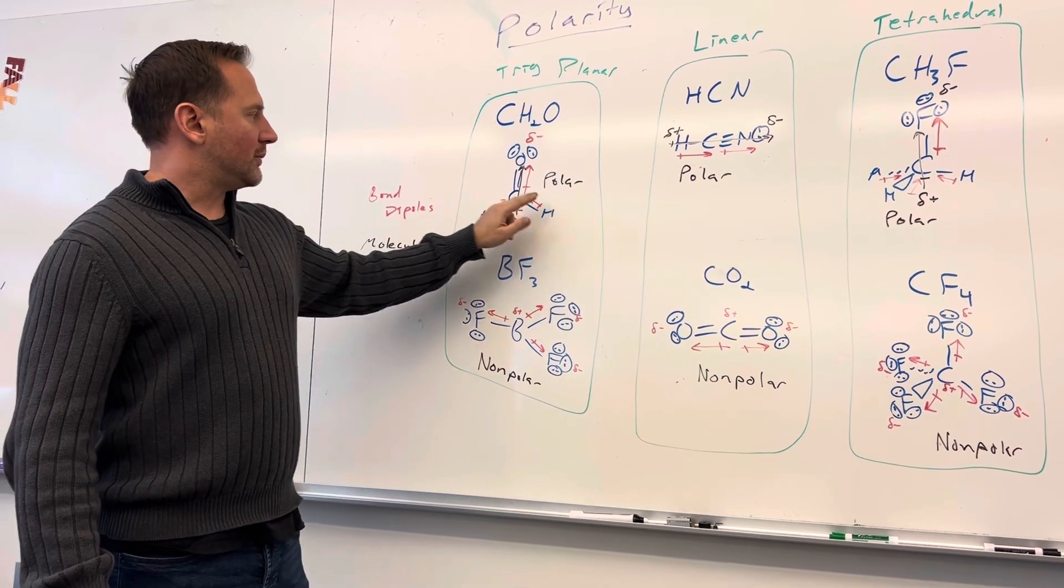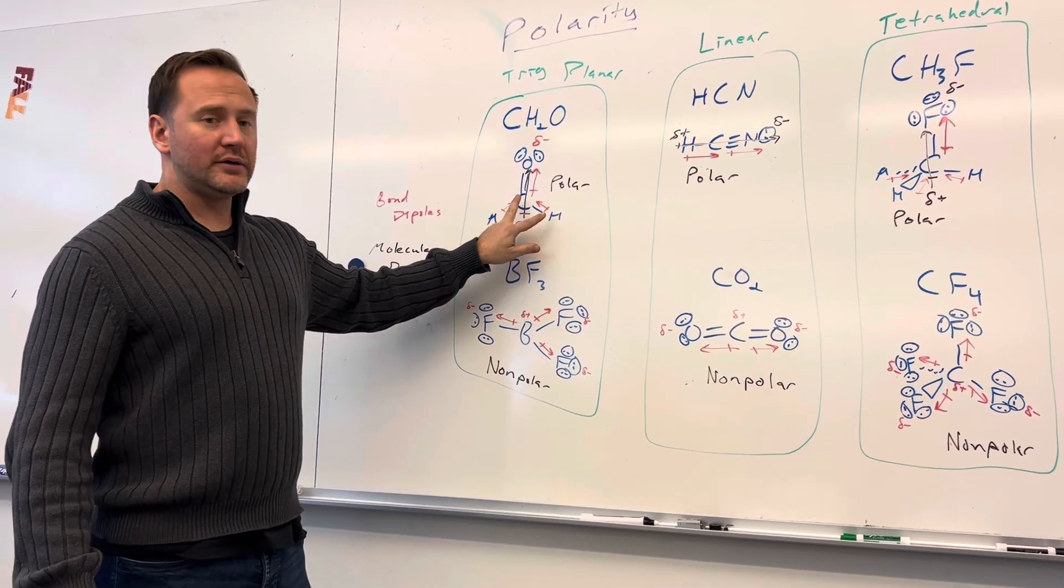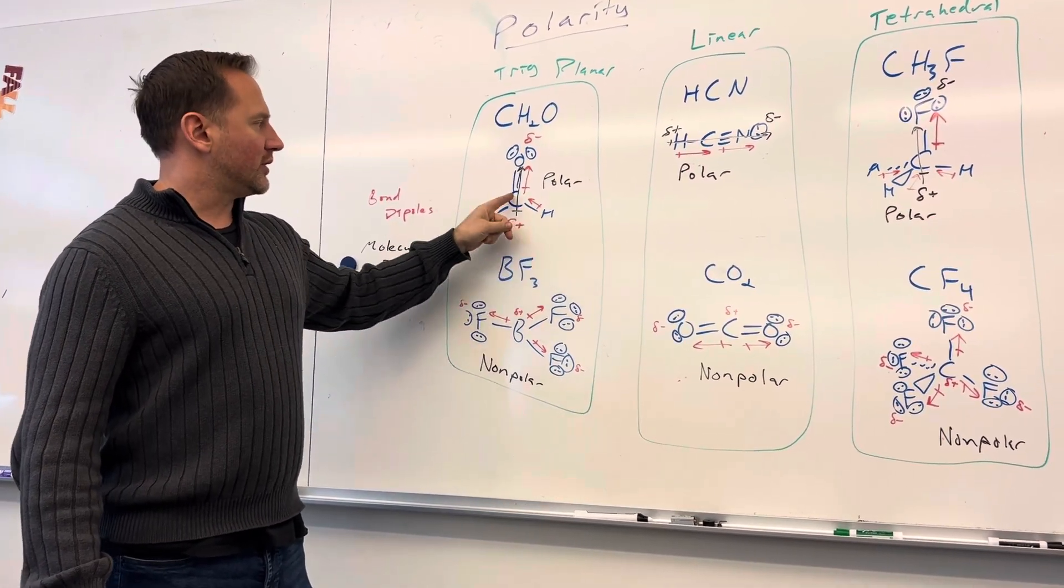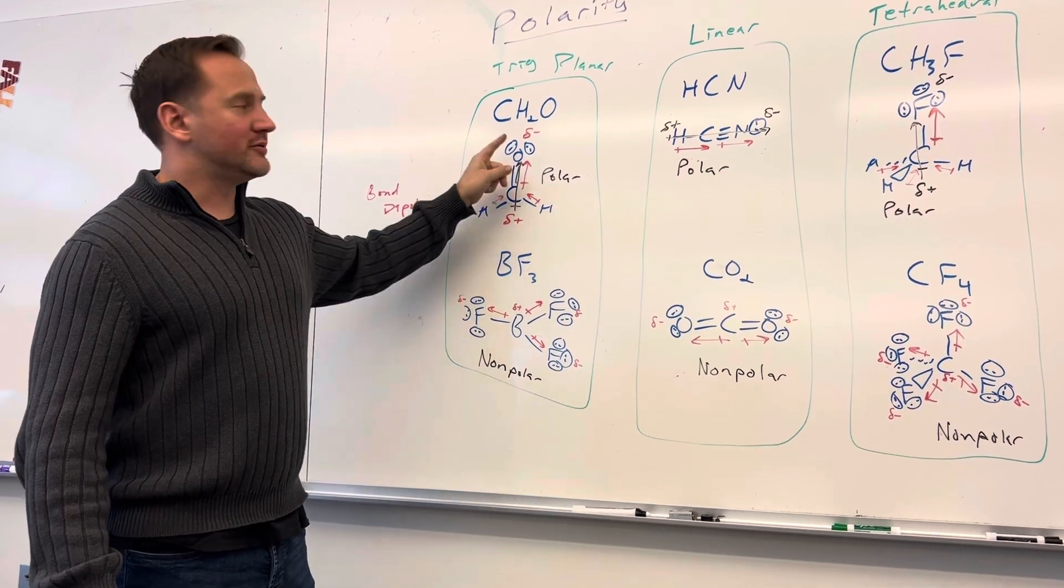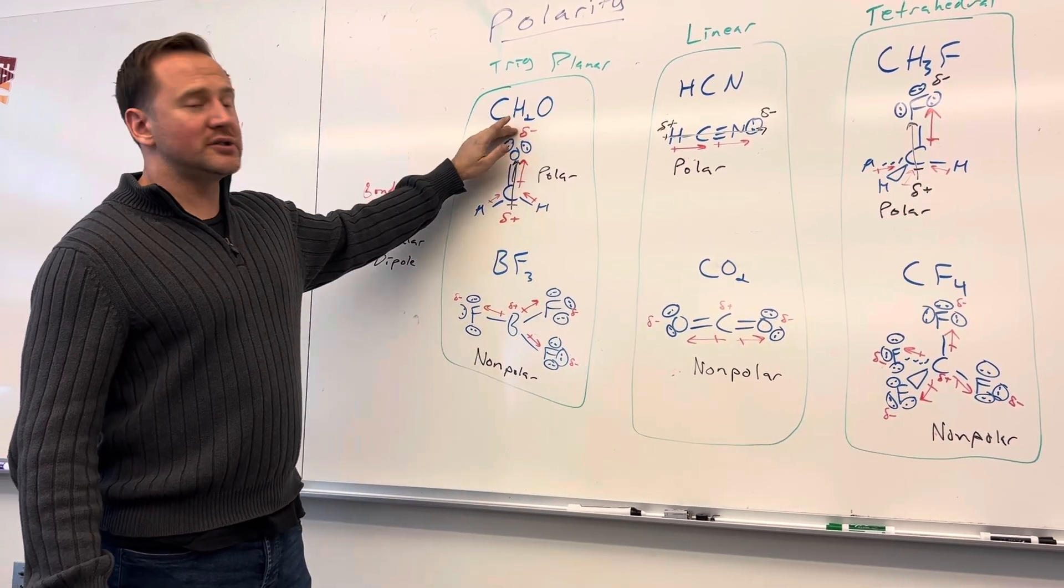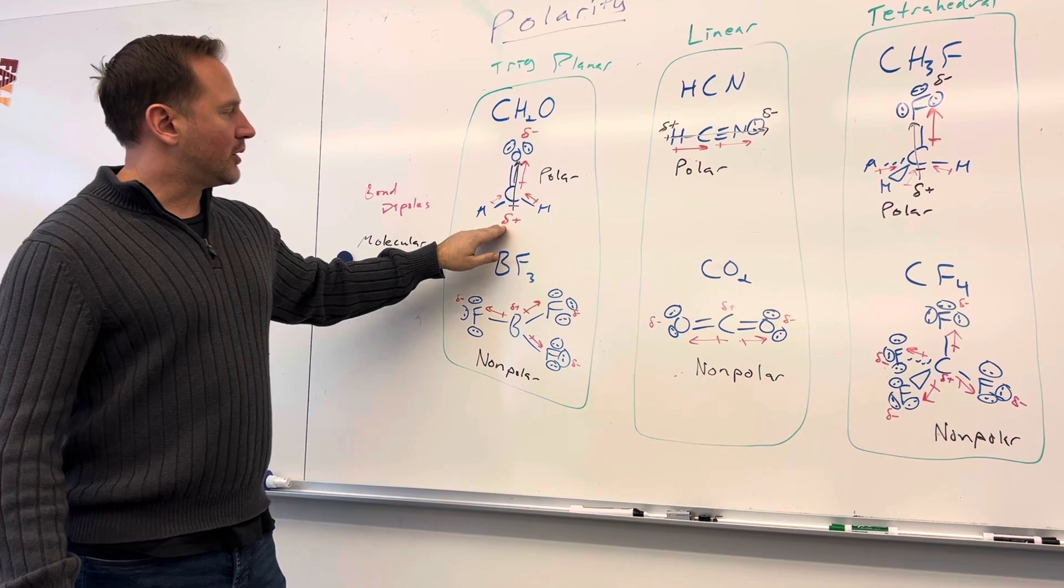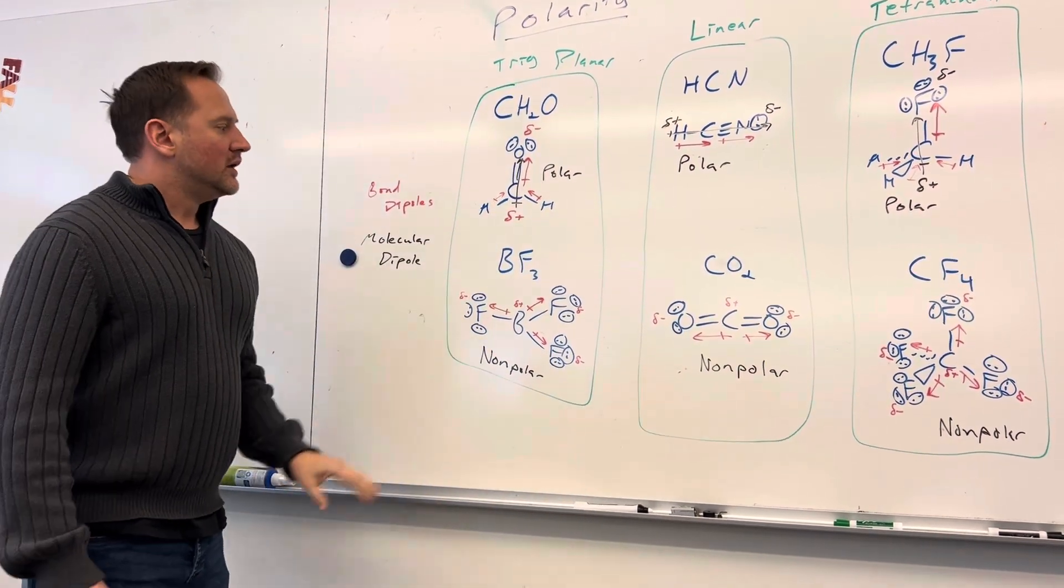So our bond dipoles, which show the difference in strength between the two atoms in a bond, point towards the carbon from the hydrogen, but then from the carbon to the oxygen. So therefore, we have a partially negative oxygen end and a partial positive rest of the molecule.